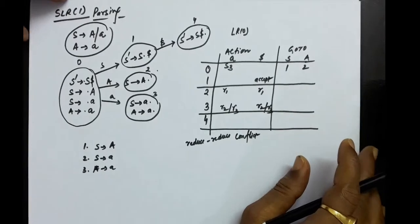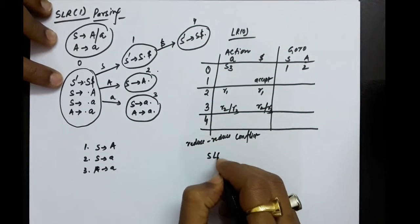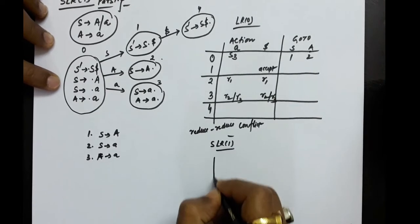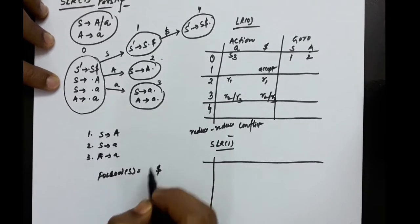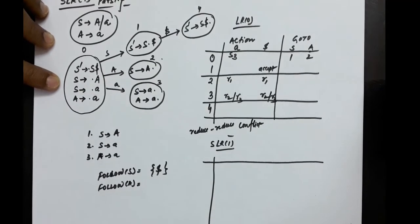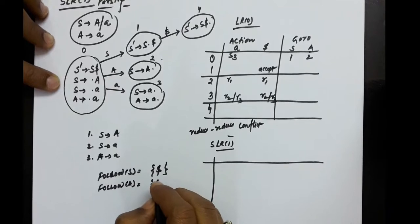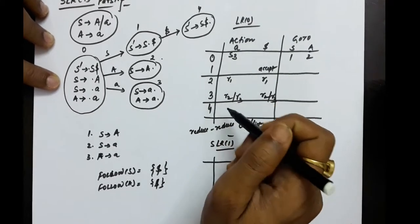Let's find a resolution. We computed LR0 items; now let's try SLR1. SLR1 suggests doing reductions only at the places of the FOLLOW set. First compute FOLLOW of S and FOLLOW of A. FOLLOW of S contains dollar because S is the start symbol and does not appear on the right-hand side. For FOLLOW of A, since A does not appear on the right-hand side, FOLLOW of A equals FOLLOW of S, which is also dollar.